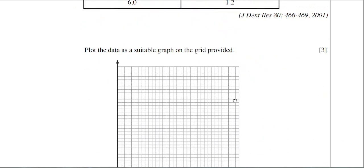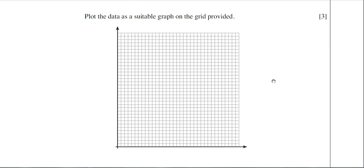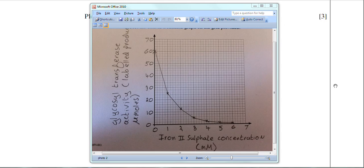The examiner now wants you to plot that data on a graph. You need to construct an appropriate scale for both the y and x axes. The graph paper grid is seven squares by seven squares. The maximum iron sulfate concentration is 6 millimolar, so for every large square I've gone up in ones — a good linear scale along the x axis. The iron sulfate concentration goes on the x axis because that is the variable you're changing.